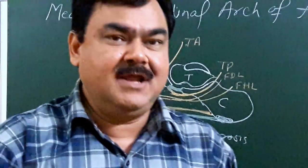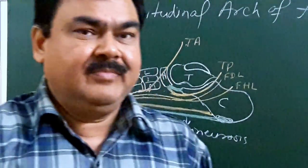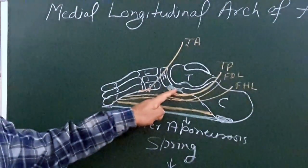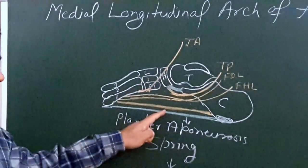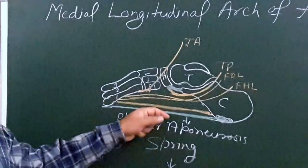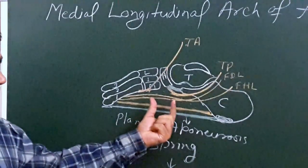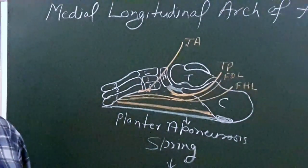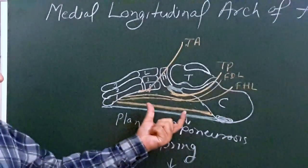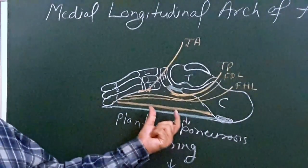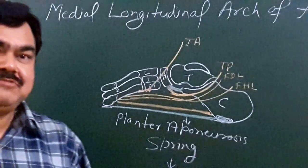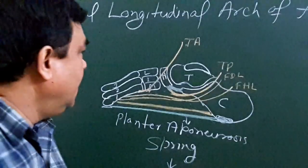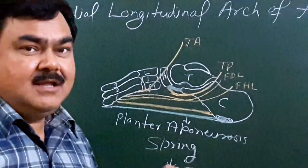These are the structures and supports of the medial longitudinal arch and the factors responsible for maintaining it. If the spring ligament or these structures become weak, it results in flat foot, or pes planus. If these structures become contracted, a high arch foot develops, known as pes cavus.